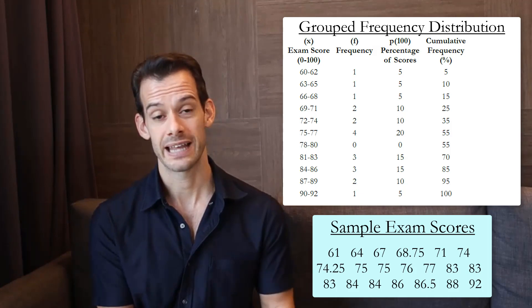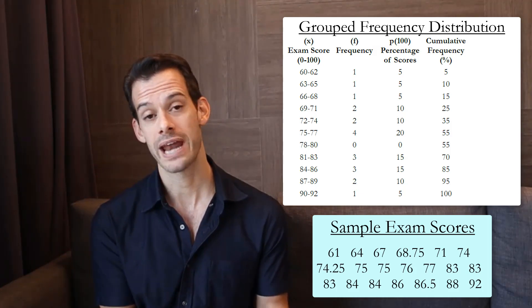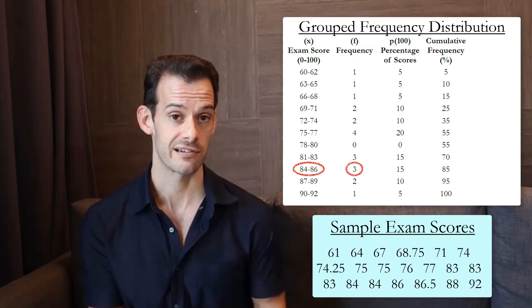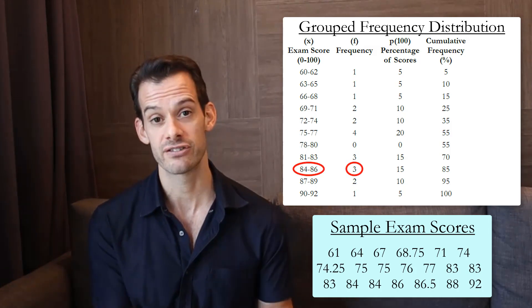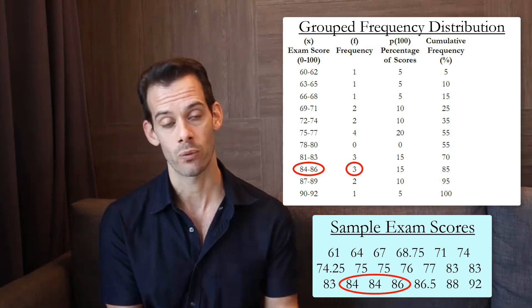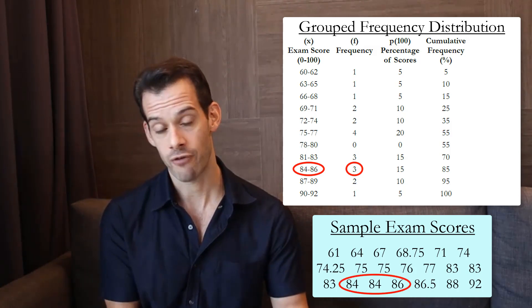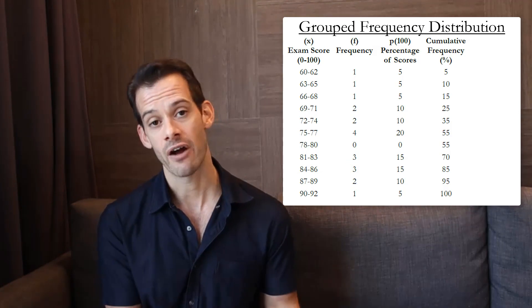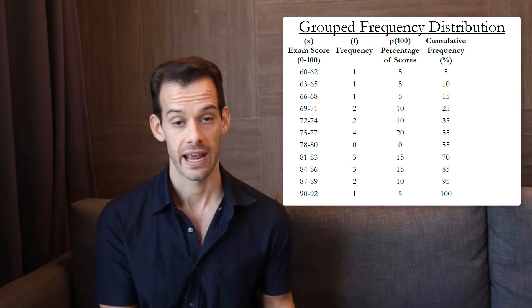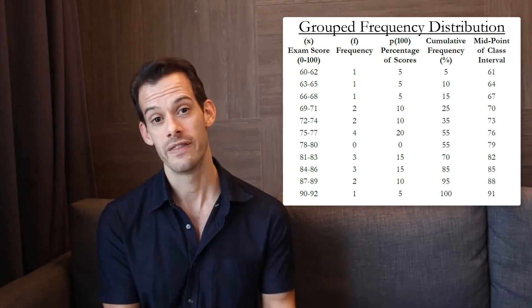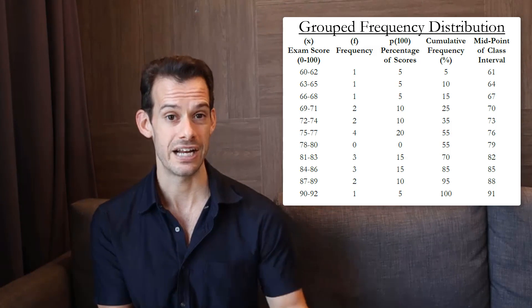We do this by assuming that each individual score is just located at the midpoint of its class interval. So if we look at this class interval here, we just assume that all three scores are 85. Now in reality, two were 84 and one was 86. But if all we have is the table, we don't necessarily know that. So we make this assumption and on average we'll be pretty close. And if we wanted we could add a column to our distribution table and show the midpoint values for each of these intervals.